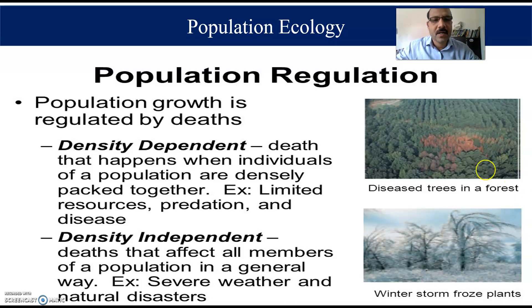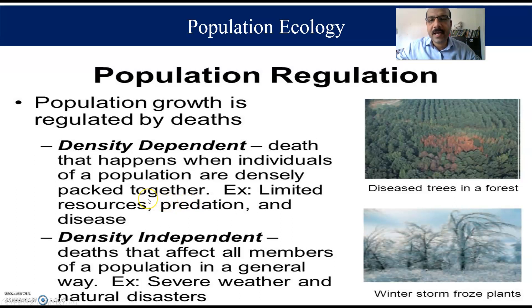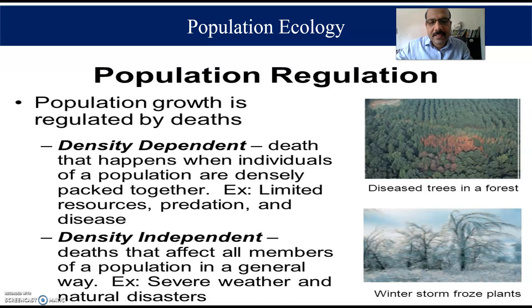There are two important factors which are regulating population. One is called density dependent — death that happens when individuals of a population are densely packed together. Examples include limited resources, predation, and disease.